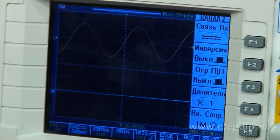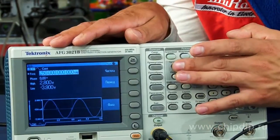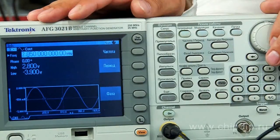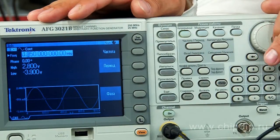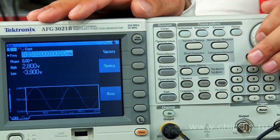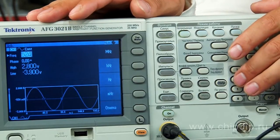To change any parameter of a generated signal, push the corresponding buttons and change parameter values with the handler. We can also use the digital keyboard for changing parameters.